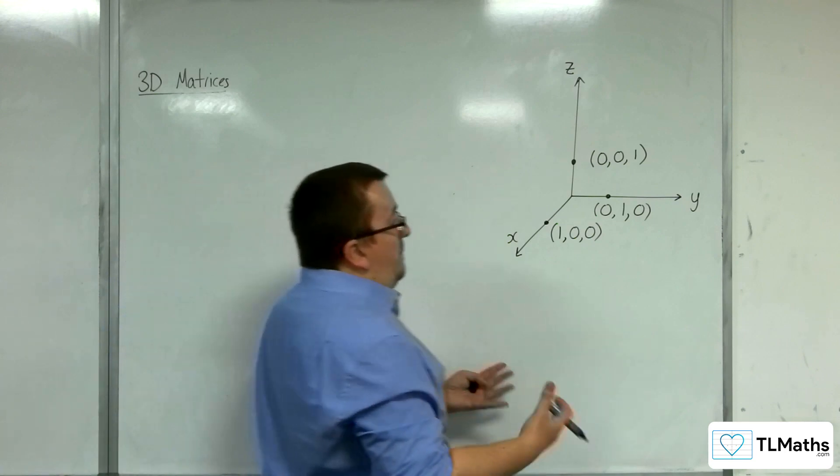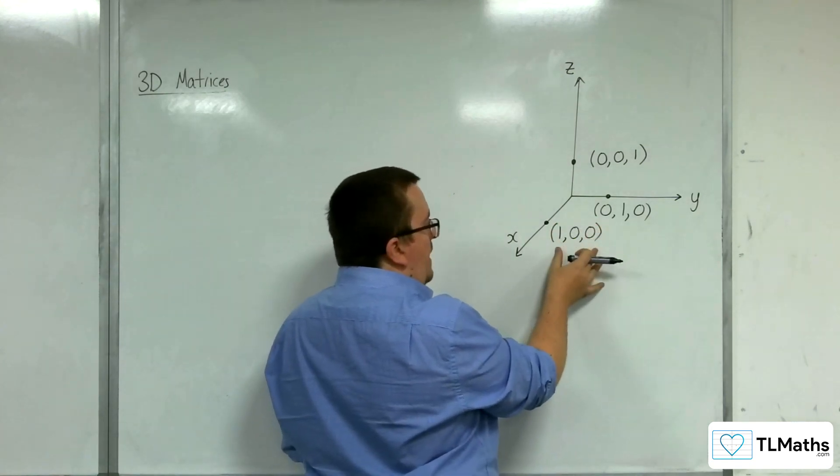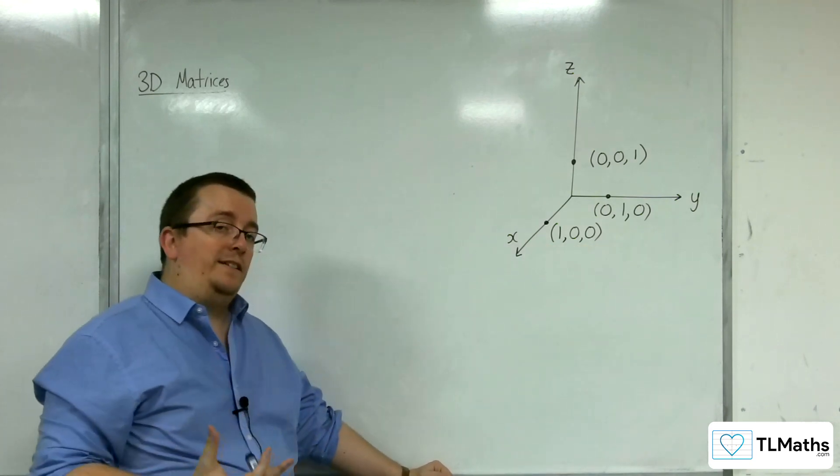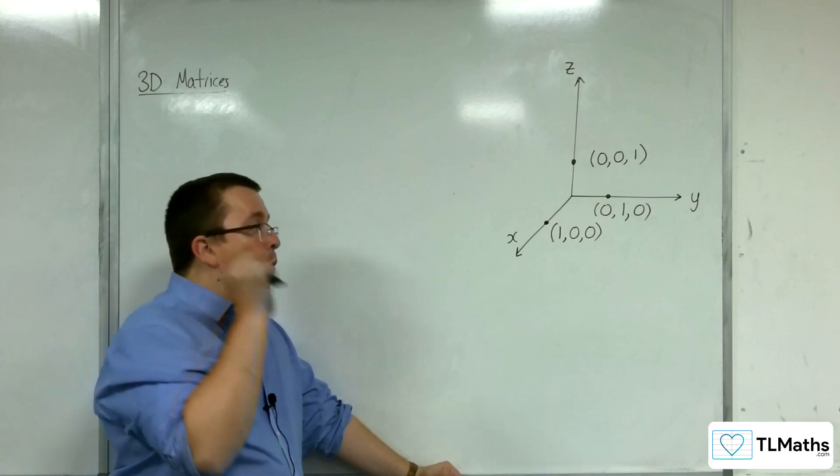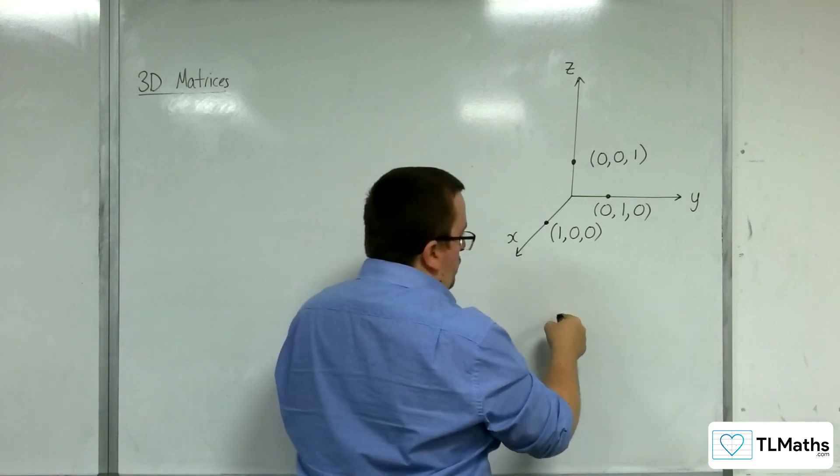Now, there is something linking these here. Because the way that I've done one, zero, zero there, if you think of it as a position vector, what is the position vector for that coordinate? You need to go one in the x, zero in the y, zero in the z: one, zero, zero.